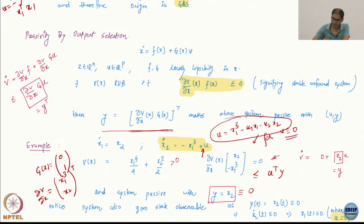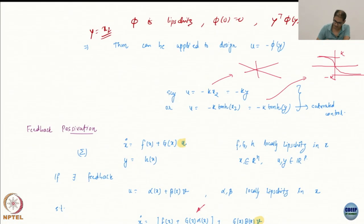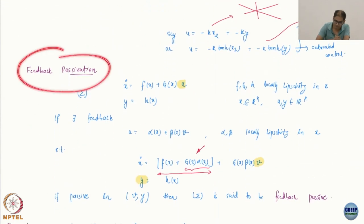So, passivity by output selection is a possibility, as long as your system is stable in the sense of Lyapunov. So great, there is at least some hope. Now, what happens when you don't have a stable in the sense of Lyapunov system? Then you go for what is called feedback passivation. You try to use the feedback to get passivity. That's the idea.